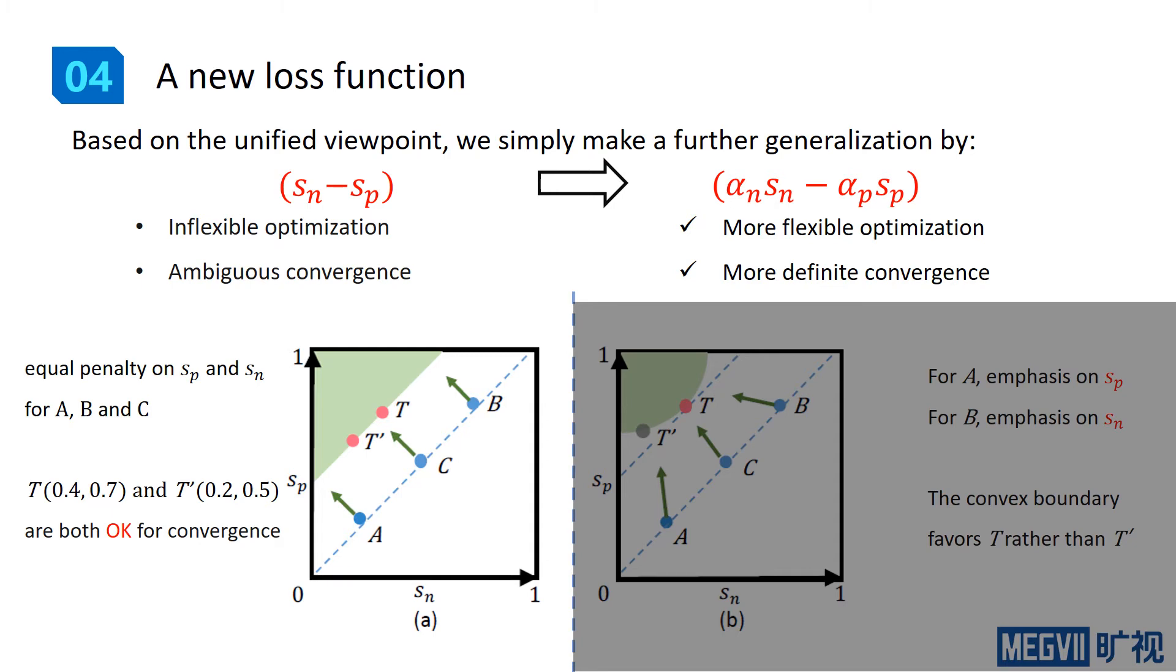Assuming both T and T-hat have s_p larger than s_n by 0.3, the actual gap between the s_p and s_n is only 0.1. It thus compromises the discriminative ability of the learned feature space.